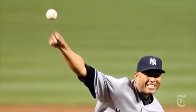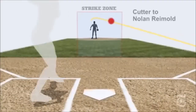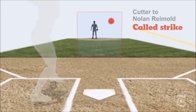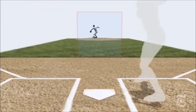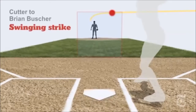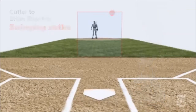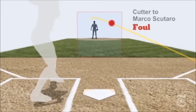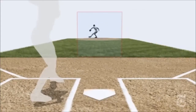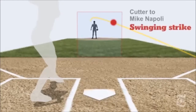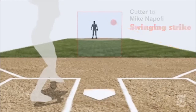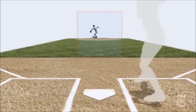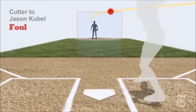Mariano Rivera is one of the most dominant closers in history, and what may be most remarkable is that he has done it by confounding hitters with mostly one pitch — his signature cutter. John Flaherty of the YES Network faced Rivera as a hitter and also caught him when he played for the Yankees. From a hitter's standpoint, he's out on the mound and it feels like he's not even putting any effort into it, and the ball explodes on you. From a catching standpoint, he's the easiest guy ever to catch because he throws the ball right where you want it.